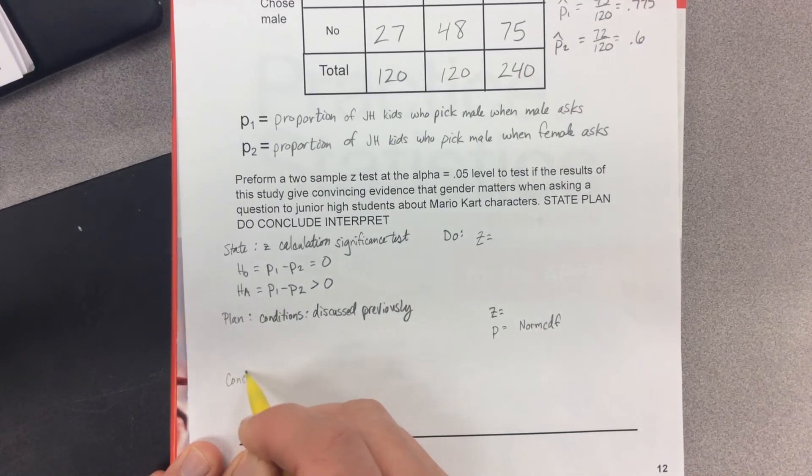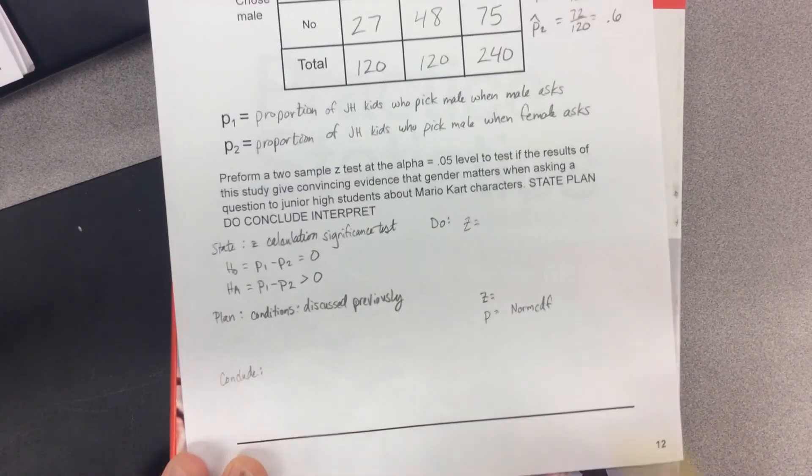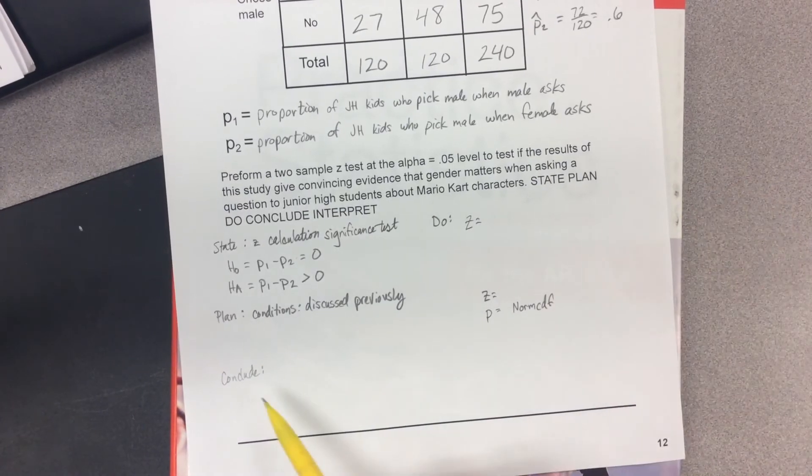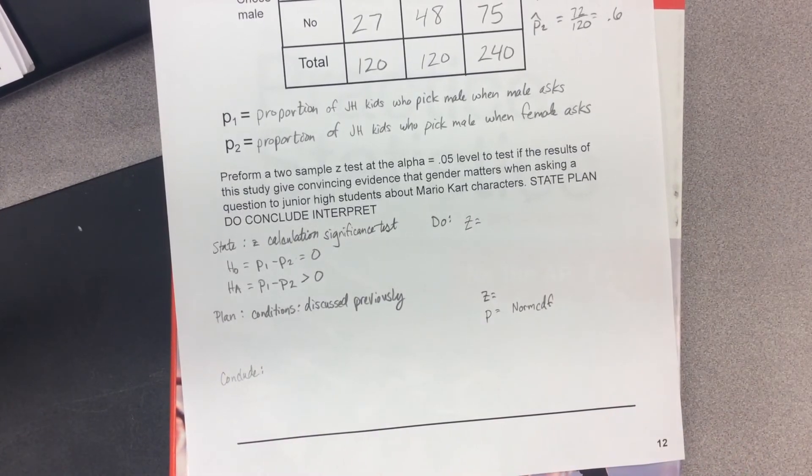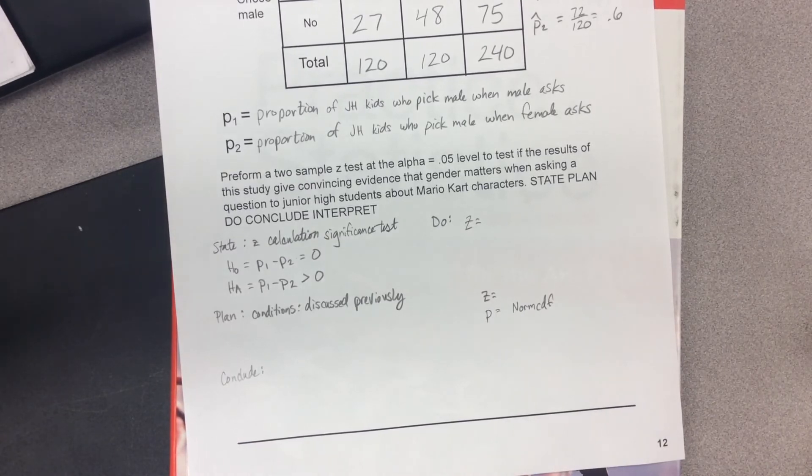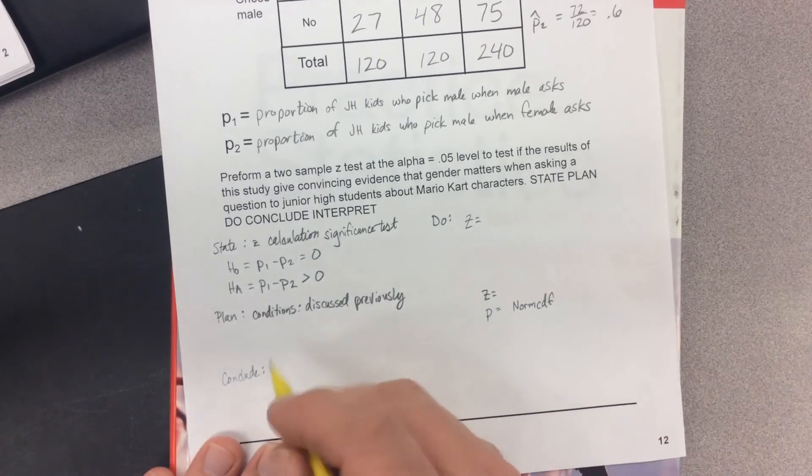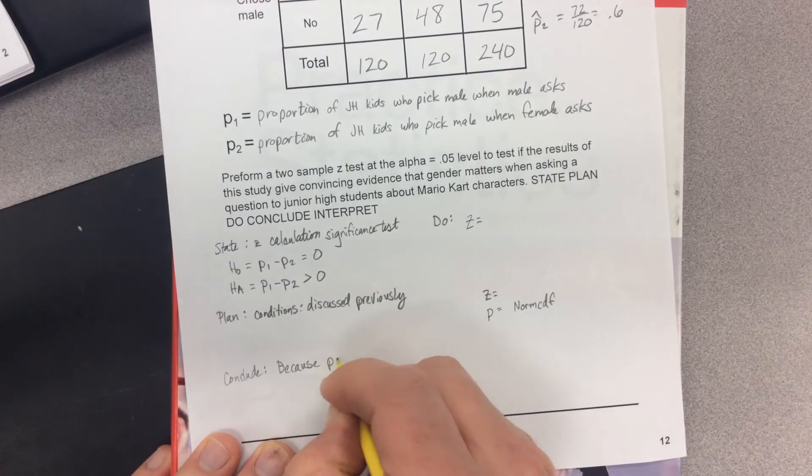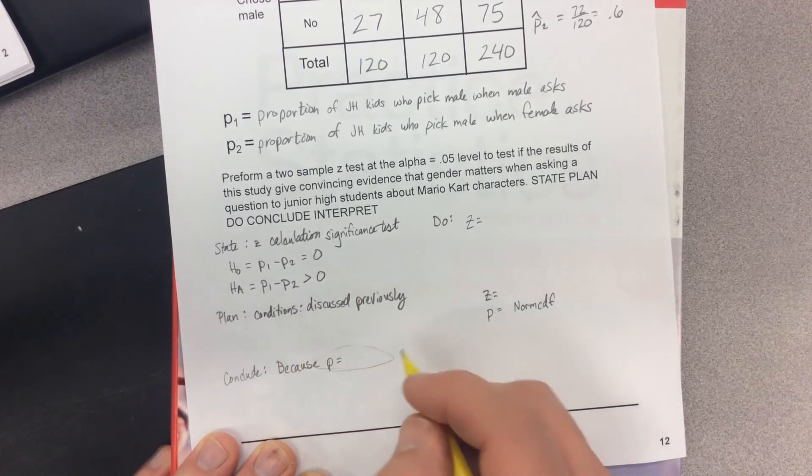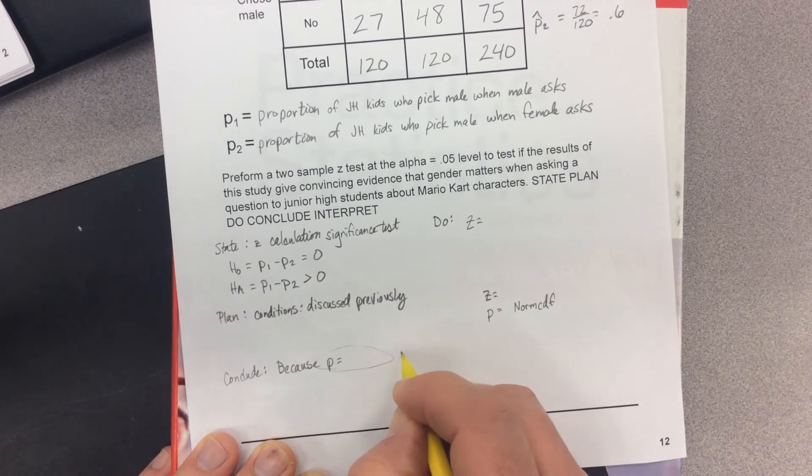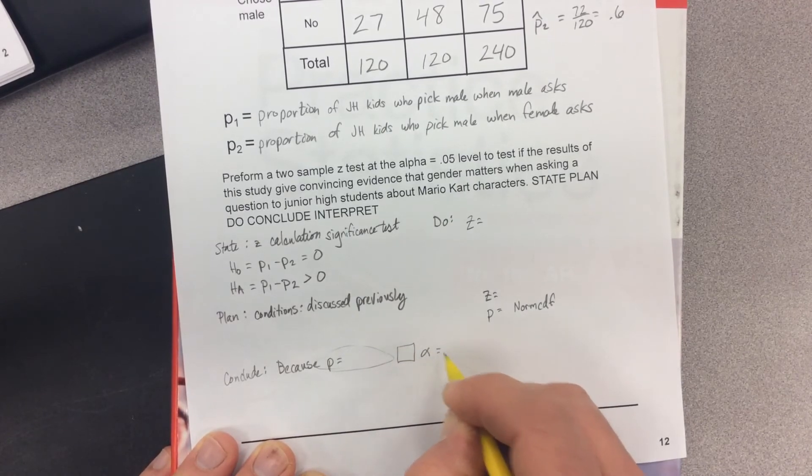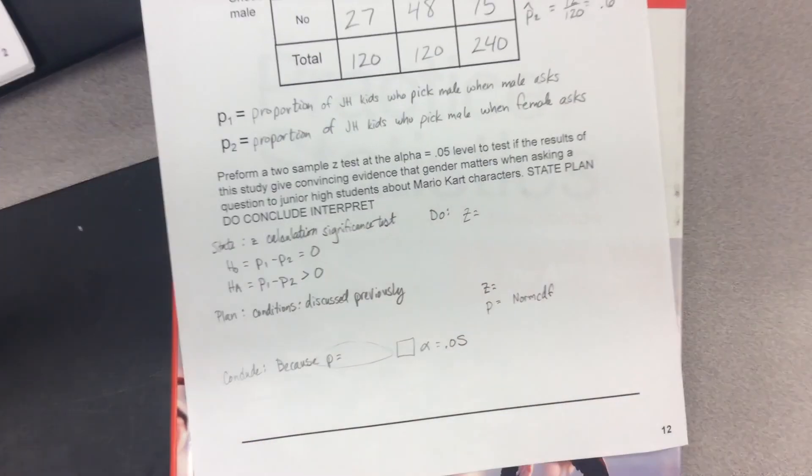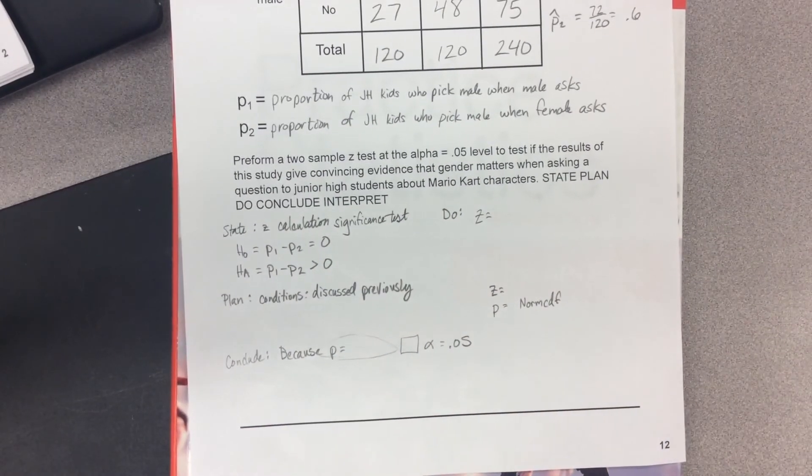After you do that, you're going to conclude. You will conclude a significance test, make a conclusion just like we've done before. Your conclusion, you'll say because P is equal to whatever you found is greater than, less than, or equal to an alpha of 0.05, we have or we don't have convincing evidence that gender matters when asking a question to junior high students.